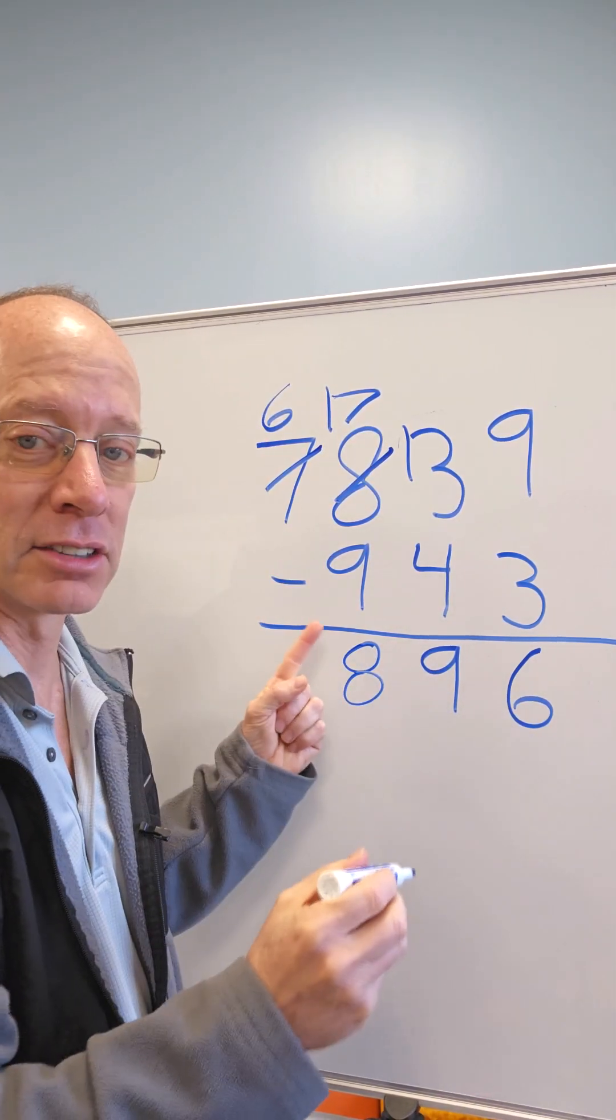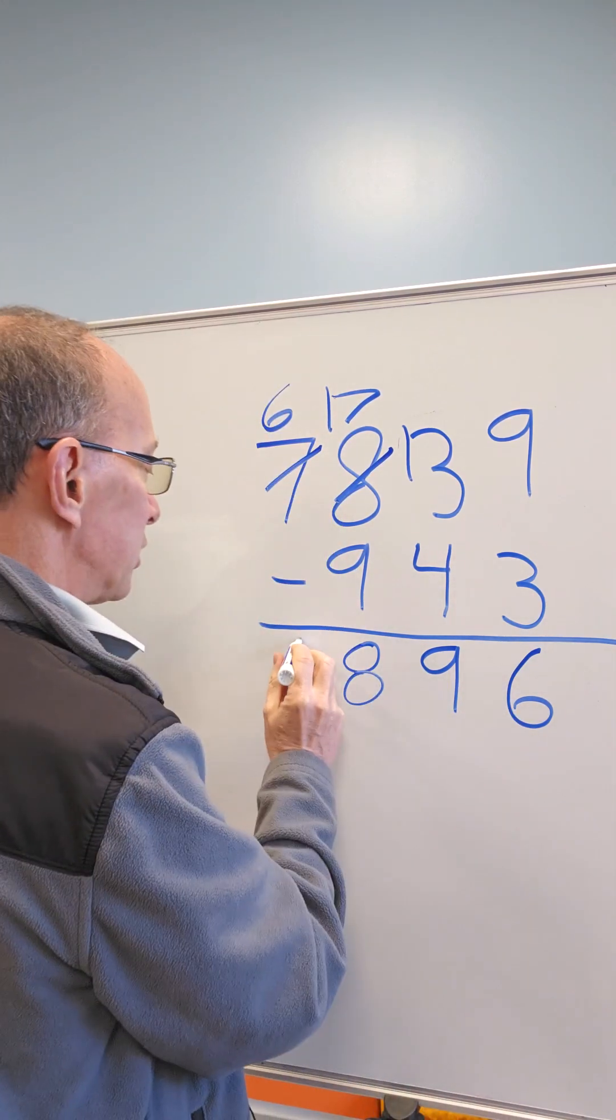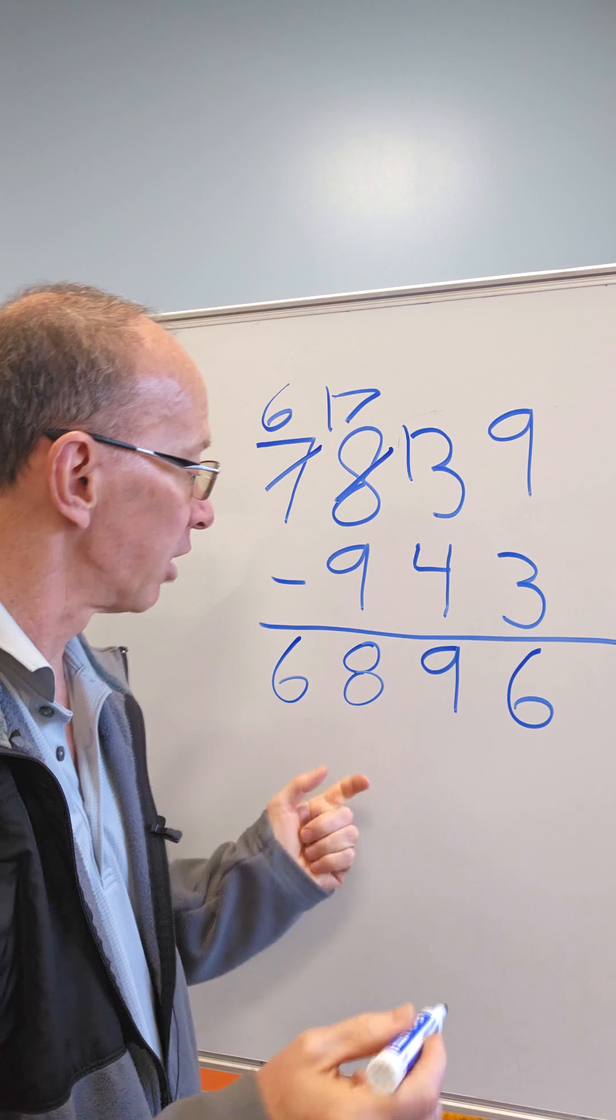So now take that 6. There's nothing to subtract it from. Drop it down. Let's bring that 6 right down here. There's our answer. 6,896.